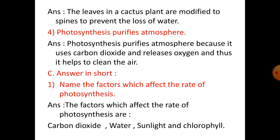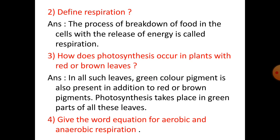Section C — Answer in short. Number one: The factors which affect the rate of photosynthesis are carbon dioxide, water, sunlight, and chlorophyll. Number two: Define respiration — the process of breakdown of food in the cells with the release of energy is called respiration.